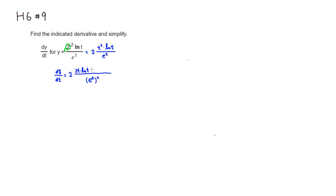I'm using the product rule here, plus t squared times the derivative of natural log of t, which is 1 over t. So this is the derivative of the numerator. Then you multiply by the denominator, e to the t. Then minus — because we're doing the quotient rule — the top, t squared times natural log of t, multiplied by the derivative of the denominator. The derivative of e to the t is again e to the t.